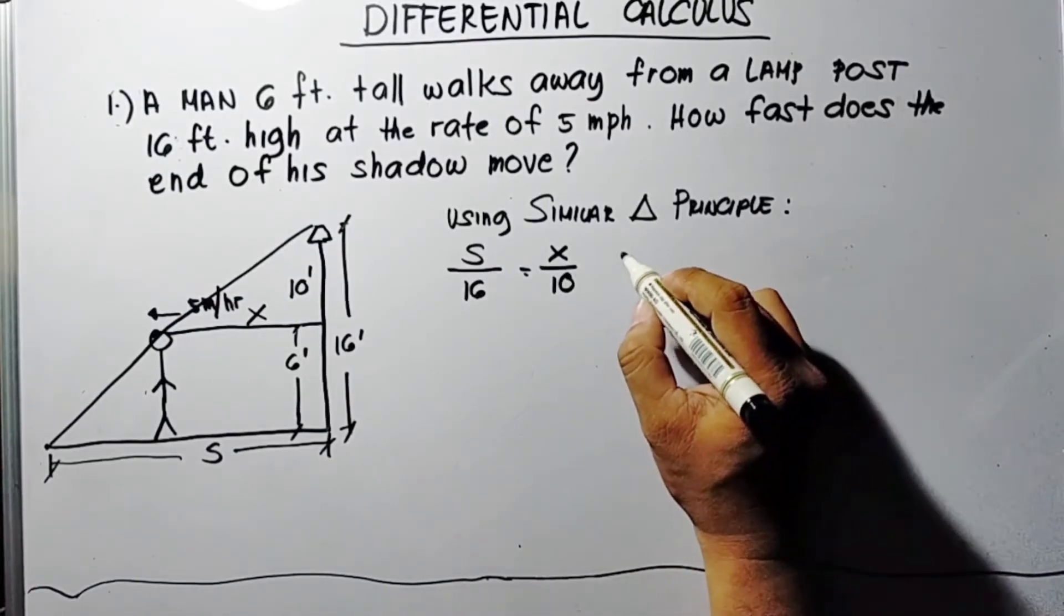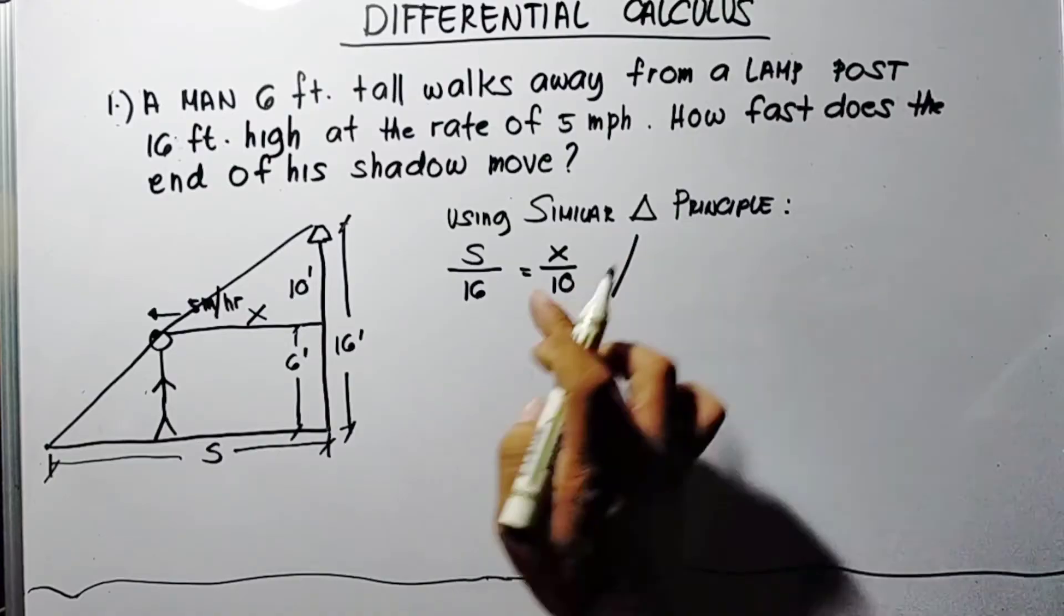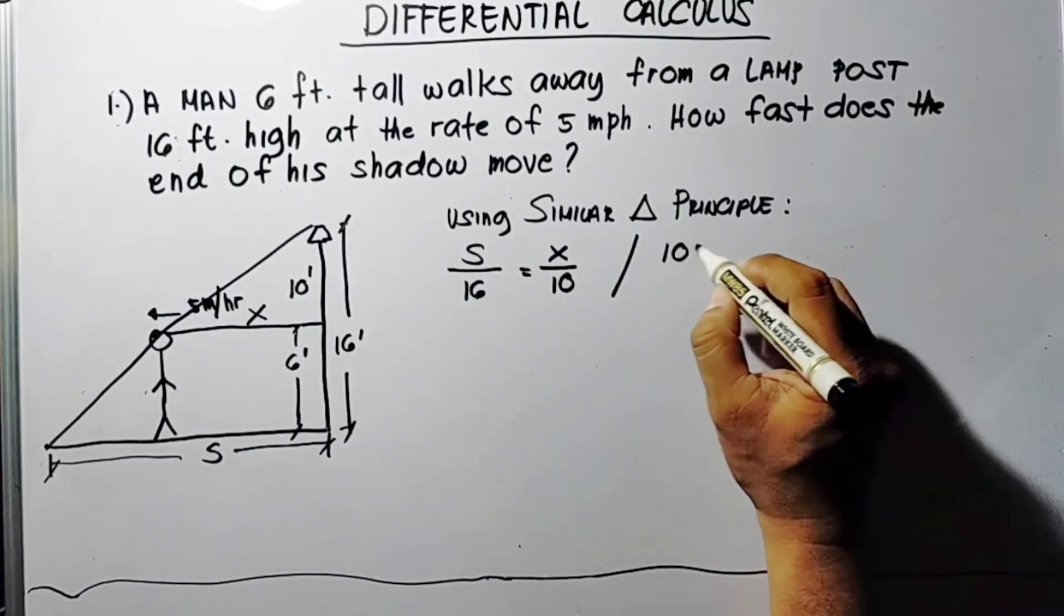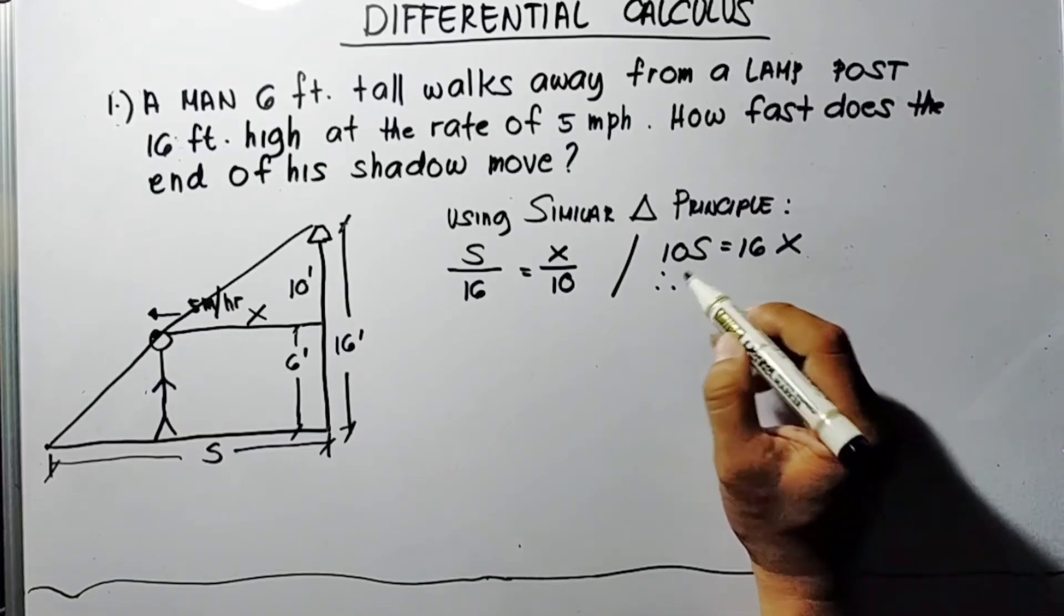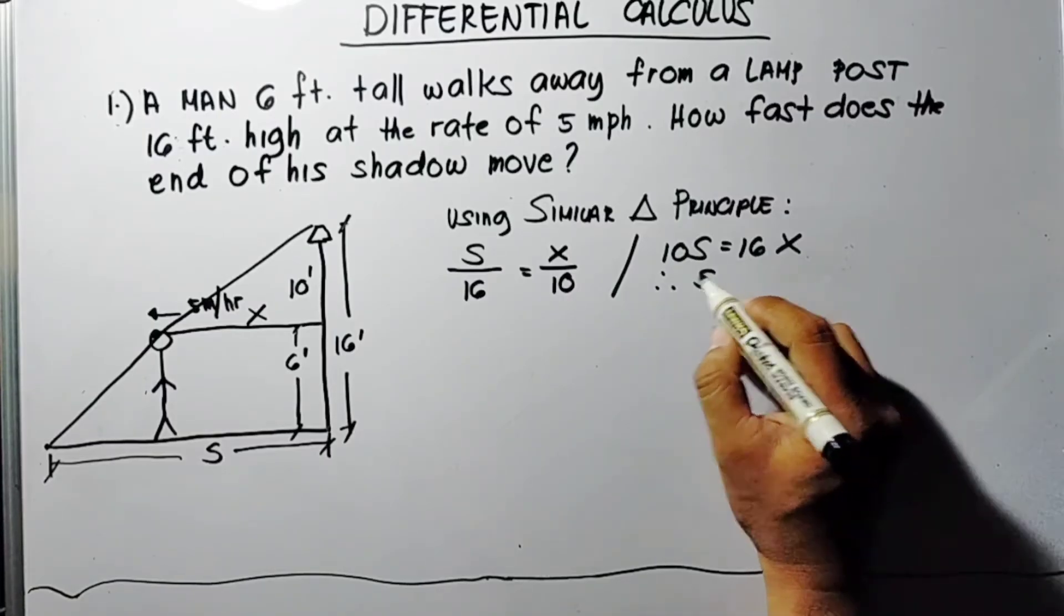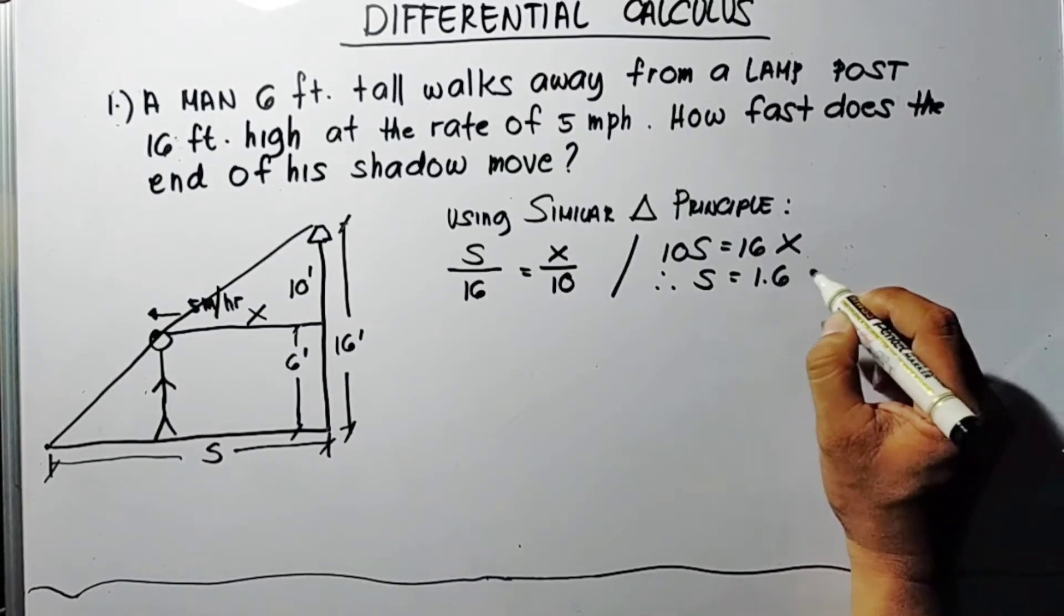We just cross multiply: 10s equals 16x. Therefore s equals 16 divided by 10, that would be 1.6x.